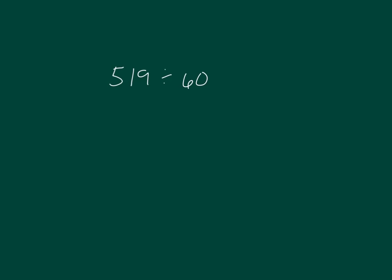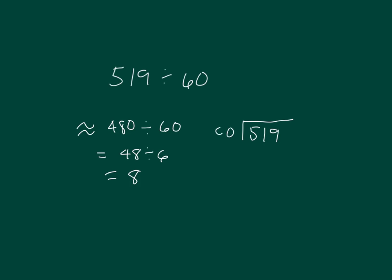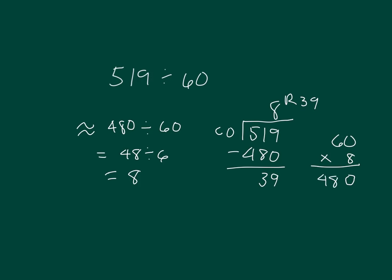519 divided by 60 — that's about 480 divided by 60, which equals 48 divided by 6, which equals 8. Let's try that: 519 divided by 60. 8 times 60 is 480. We subtract to get a remainder of 39. Run a check: 60 times 8 — 8 times 0 is 0, 8 times 6 is 48 — then add back in the 39, and we do get 519, which is what we were dividing in the first place.